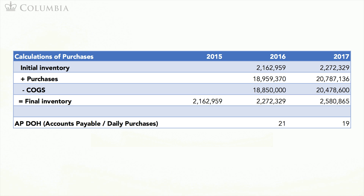Let's compute purchases for 2016. The final inventory comes directly from the 2016 balance sheet. The initial inventory in 2016 is its inventory as of early morning on January 1st, 2016, which is the same as the inventory as of December 31st, 2015 — so we take it from the 2015 balance sheet. We also add the 2016 income statement COGS.